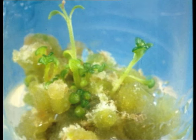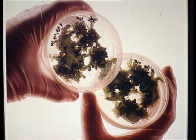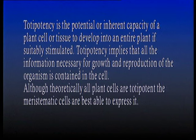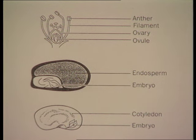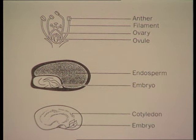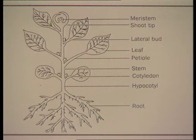This means that every part of the plant has the ability to produce a complete plant and thus be used in the process of tissue culture. Basically any part of the plant — from roots to stem to leaf, buds, floral parts, seeds and embryos — can be utilized as starting material.